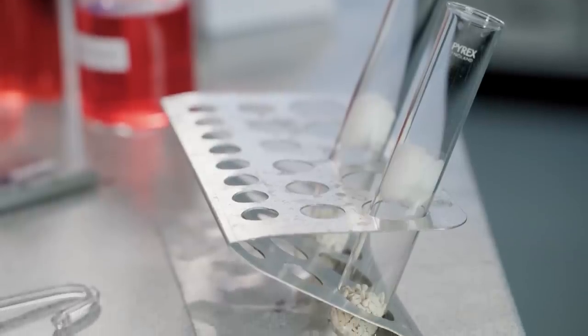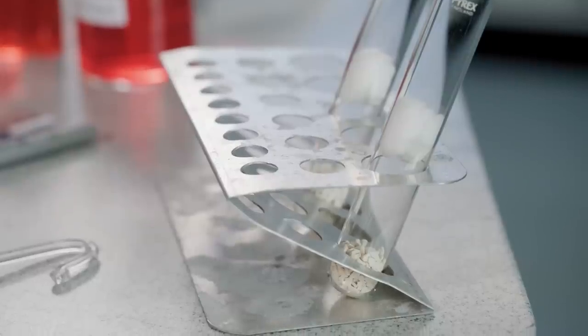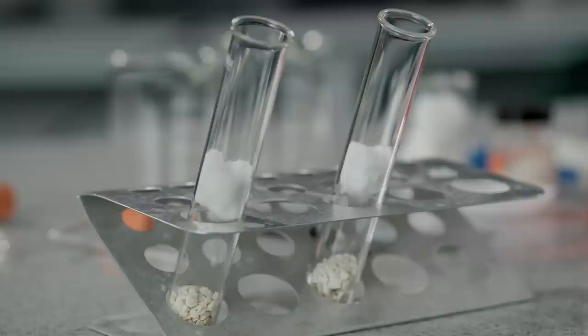Collect the boiling tube with some soda lime granules held in place with cotton wool at the top. The soda lime's function is to absorb carbon dioxide in the tube. The cotton wool function is to protect you and the organisms during the experiment.